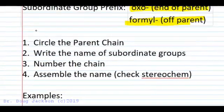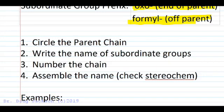We're going to be careful every time we name systematically to circle the parent chain on our paper, write the names of the subordinate groups that intersect that circle, number the chain so that the right numbers end up with the right groups, and assemble the name checking for stereochemistry to make sure we don't miss anything.